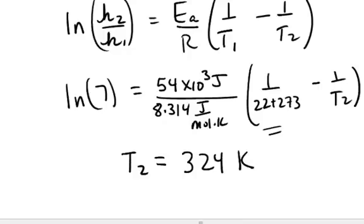but I should express this in Celsius, since the original temperature was given in Celsius. So in terms of Celsius, this is 51 degrees Celsius. So this is how you use this handy equation that relates the rate constant to temperature.